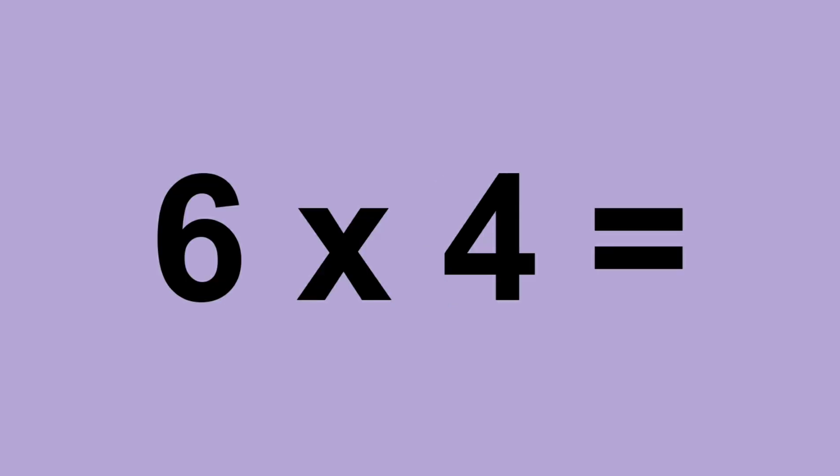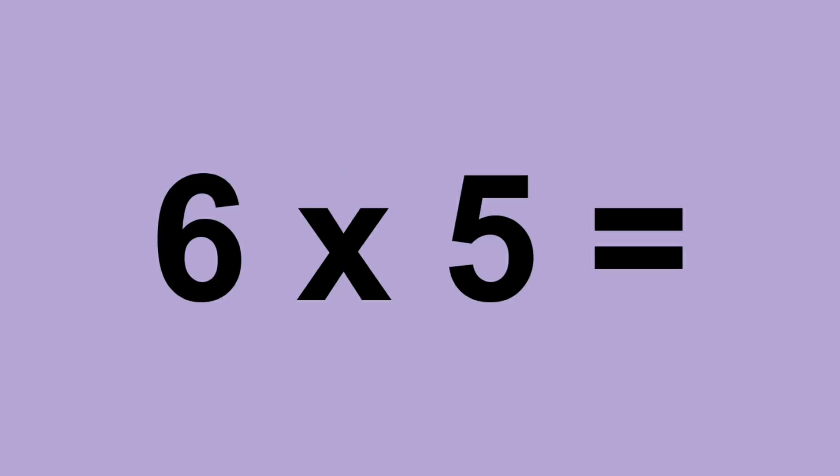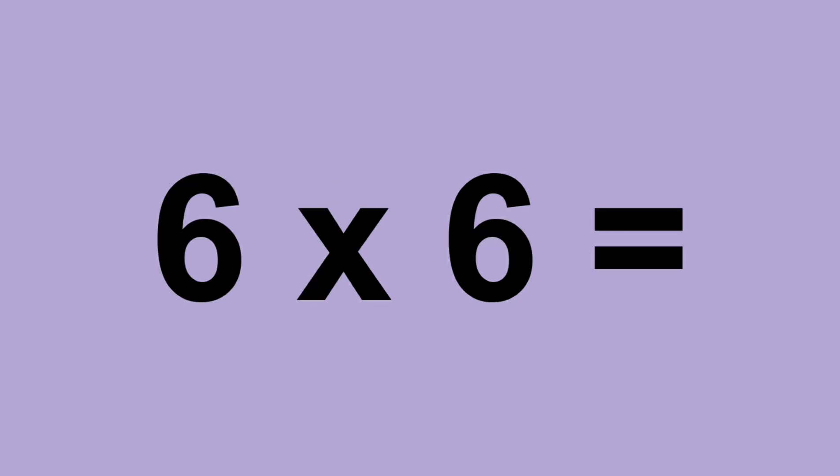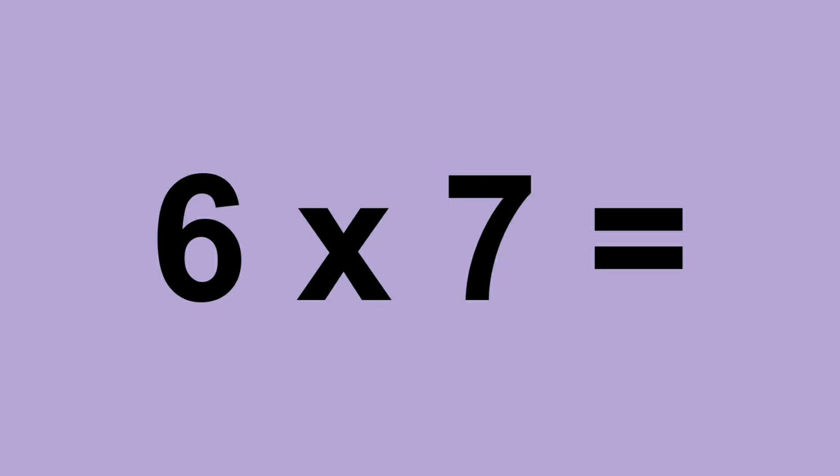Six times four equals twenty-four. Six times five equals thirty. Six times six equals thirty-six. Six times seven equals forty-six.